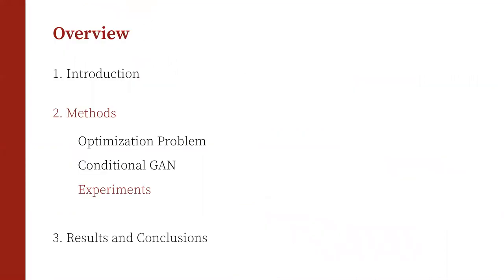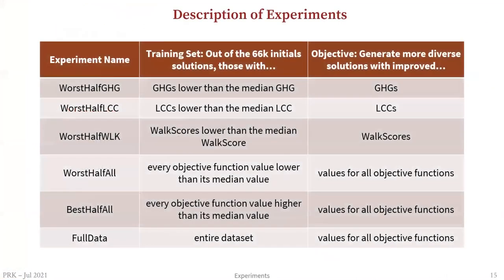We ran six experiments in this paper. The first three target each of the optimization objectives individually, letting the CGAN improve each one separately. The last three experiments target all optimization objectives simultaneously. In all experiments, we also tried to improve the diversity of the Pareto front.